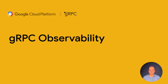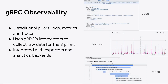So what is gRPC observability? The gRPC observability product consists of three pillars of observability: logs, metrics, and traces. We use the gRPC interceptor framework to inject our observability interceptors which generate the raw data for the three signals. This part is then integrated with exporters and backends so that the raw data is processed and sent through the exporter pipeline to an appropriate analytics backend. This end-to-end integration is what we call gRPC observability.